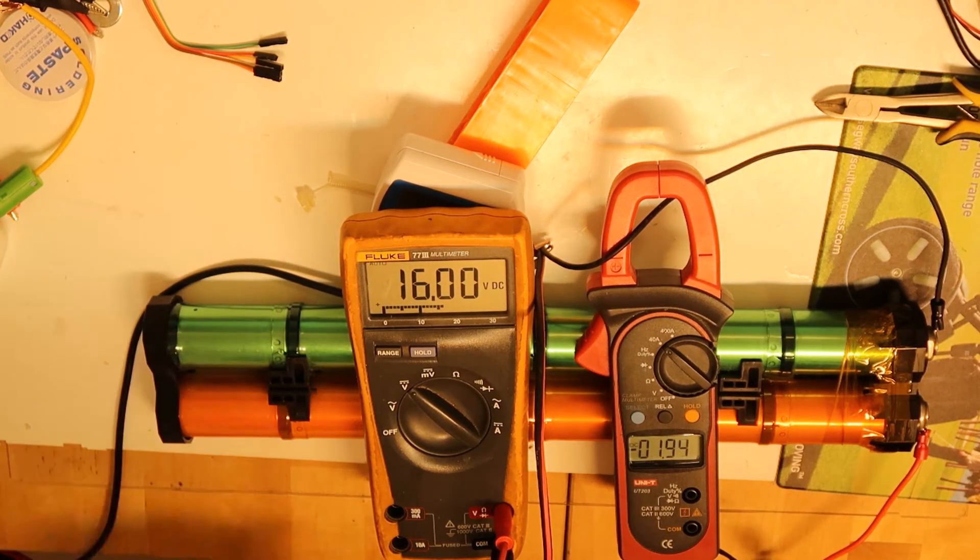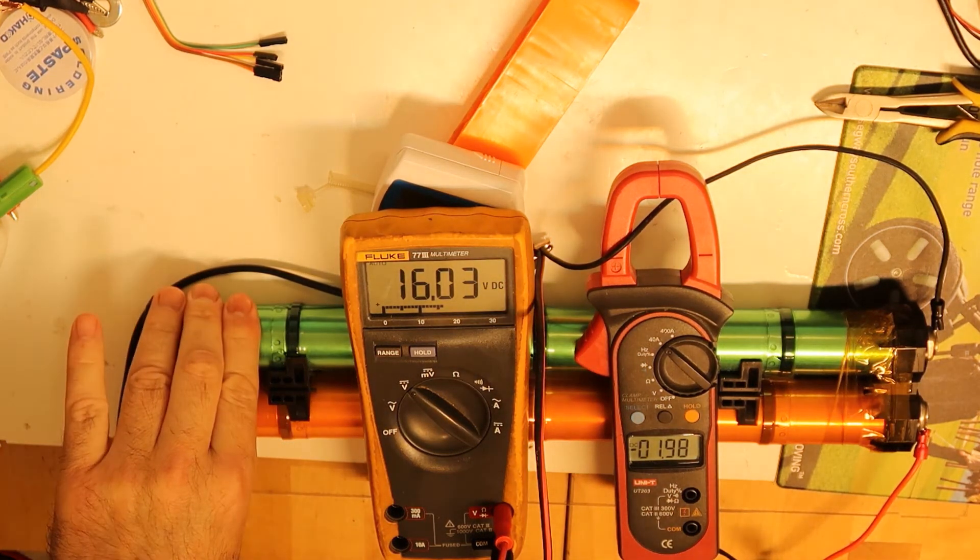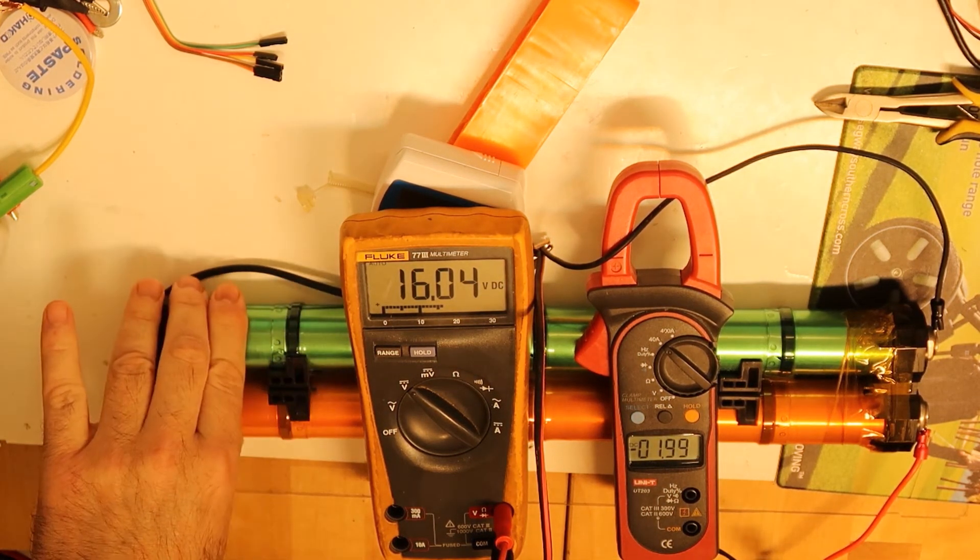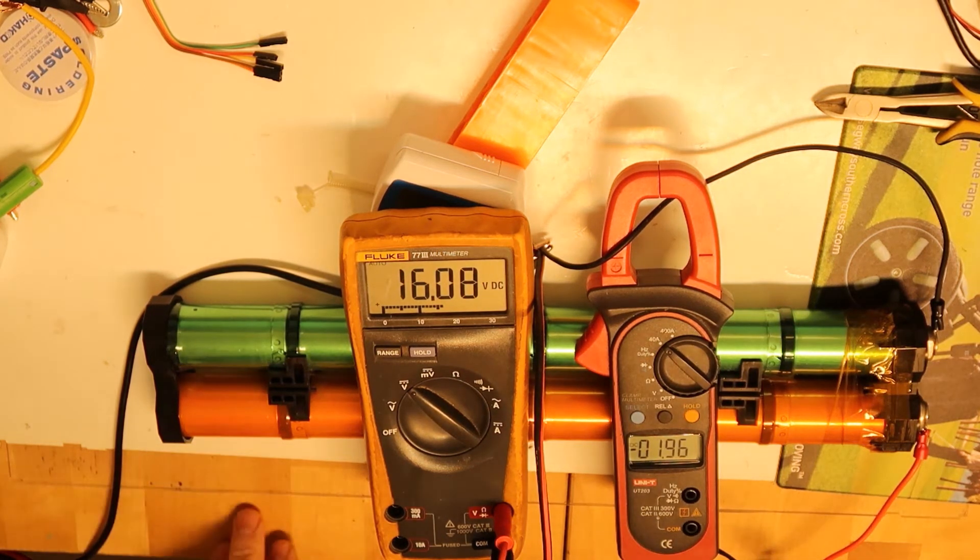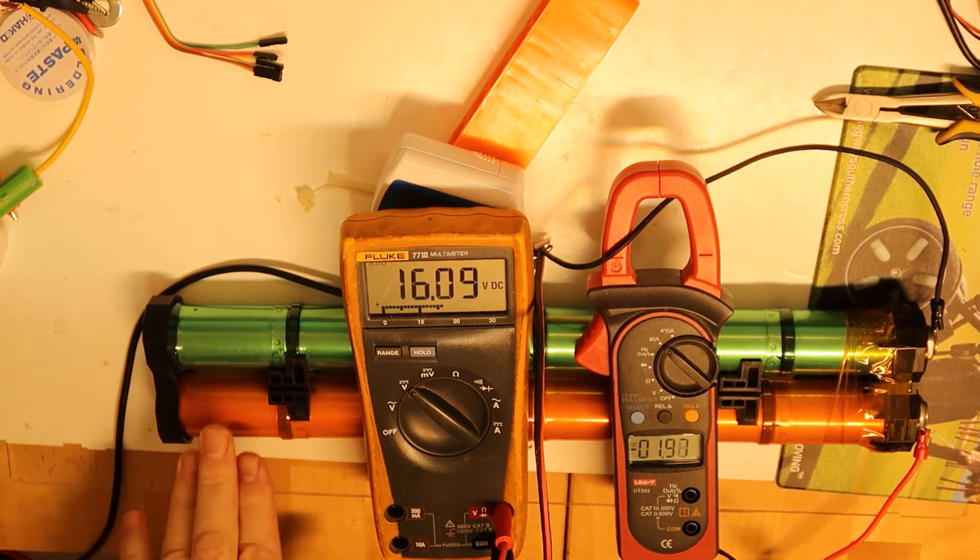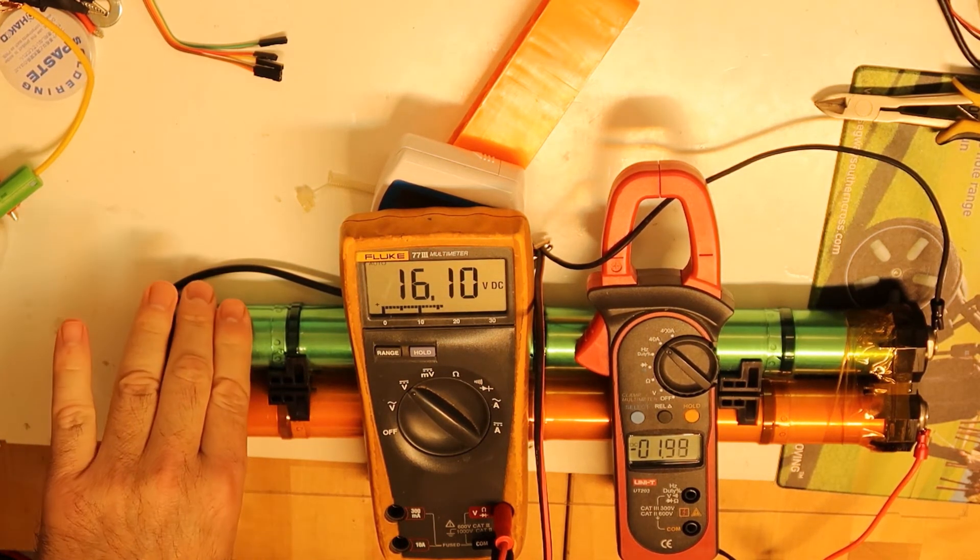I will charge to 17 volts and then we will do the discharge test and make sure that the batteries do not heat too much. But as I think the maximum charge allowed is 1.5 volts per cell, so it can be up to 18 volts.